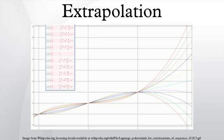Polynomial extrapolation is typically done by means of Lagrange interpolation or using Newton's method of finite differences to create a Newton series that fits the data. The resulting polynomial may be used to extrapolate the data.